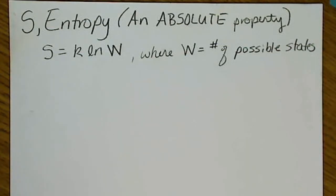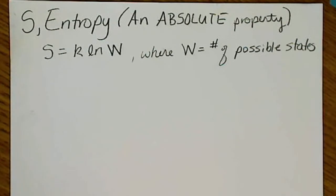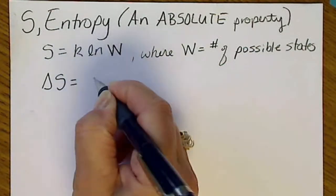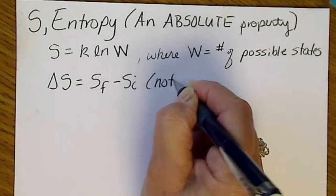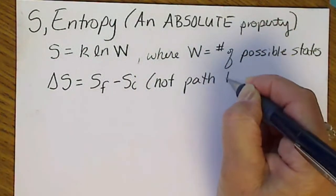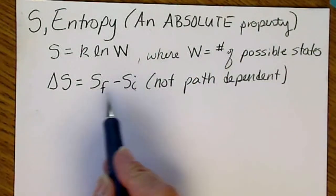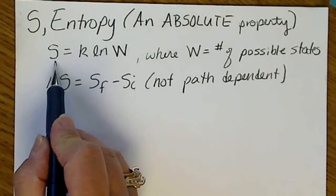We're going to take a look at the thermodynamic property of entropy, abbreviated with a capital S. The capital letter indicates it's a state function, which makes the math easy. Being a state function means that the difference in entropy, delta S — which is S final minus S initial — is not path dependent. All we look for is the overall difference between the final state and the initial state.